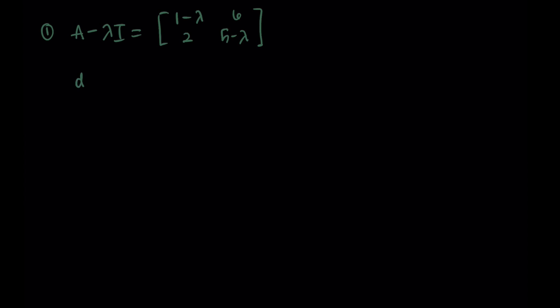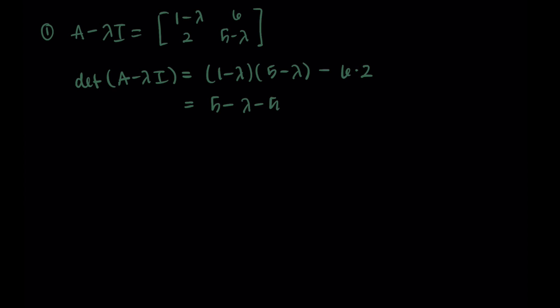Now to take the determinant of this matrix, it's AD minus BC. So that's 1 minus lambda times 5 minus lambda, and then minus 6 times 2. Simplifying by distributing and combining like terms: from the first two terms being multiplied, I'm getting 5 minus lambda minus 5 lambda plus lambda squared, and then minus 12. Combining like terms, I'm getting lambda squared minus 6 lambda minus 7. This is my characteristic polynomial for the matrix A.